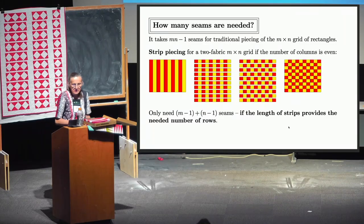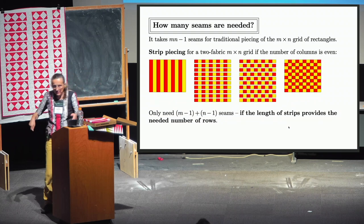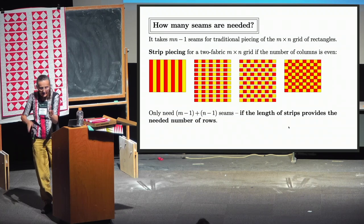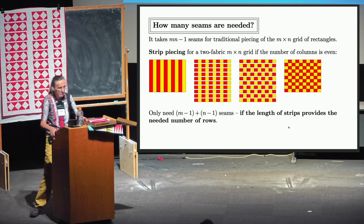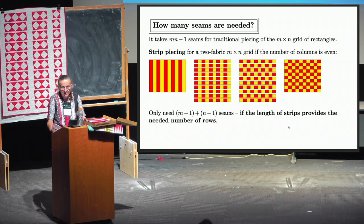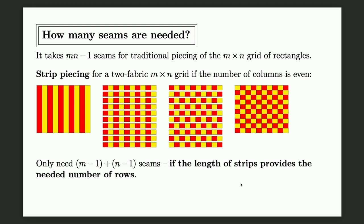Strip piecing requires far fewer seams. You cut out strips — easier with rotary cutters and rulers, like pizza cutting but precise. First you sew all the strips together: for m columns, that's m−1 seams. Then you cut across to get n rows, rotate every other row, sew them together, and you have a checkerboard. You only need (m−1)+(n−1) seams, assuming you have enough rows for the desired height.